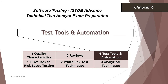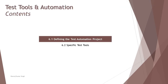Hello friends and greetings for the day. Welcome back to another tutorial of ISTQB Advanced Technical Test Analyst. We are in chapter 6, continuing with the first topic still because we had a lot to discuss. This is part 2 of defining the test automation project, and in this tutorial we'll be covering modeling business processes for automation.